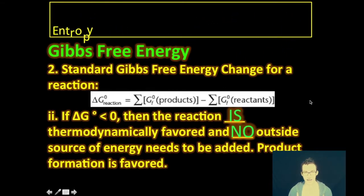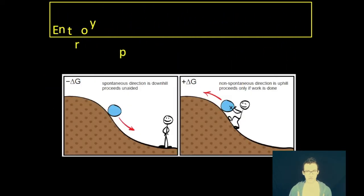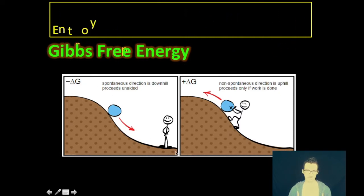Conversely, if you've got a Gibbs free energy change that is calculated to be less than zero, then we understand the reaction to be thermodynamically favored that no outside source of energy needs to be added, that we are going to form those products readily. Negative Gibbs free energy change that will happen unaided spontaneously or will be thermodynamically favored.